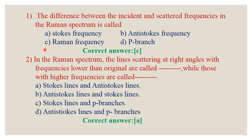The questions repeatedly asked in the PG-DRP examination. Question number 1: The difference between the incident and the scattered frequency in Raman's spectrum is called — Stokes frequency, anti-Stokes frequency, Raman frequency, or B branch?